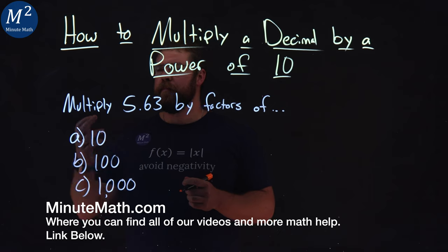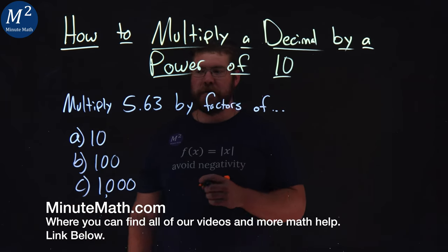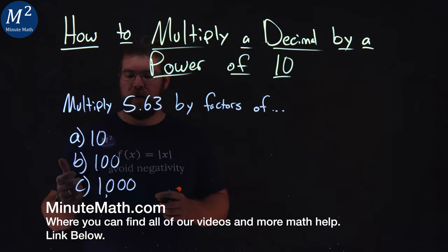We're given this problem right here. Multiply 5.63 by factors of 10, 100, and 1000.